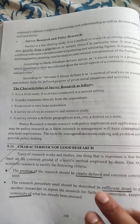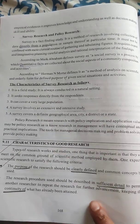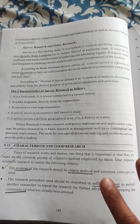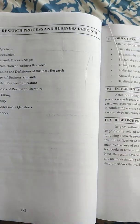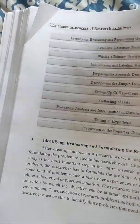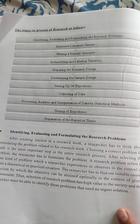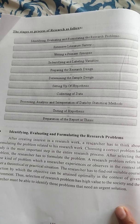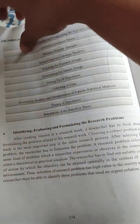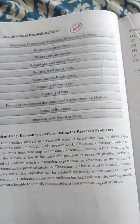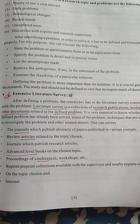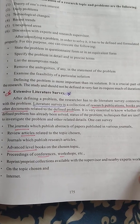Here are the characteristics of good research — all good research must meet these criteria. Next are the stages of the process of research and the different stages of research. This is important and worth 10 marks. Next, Extensive Literature Survey — it is important; see page number 175.